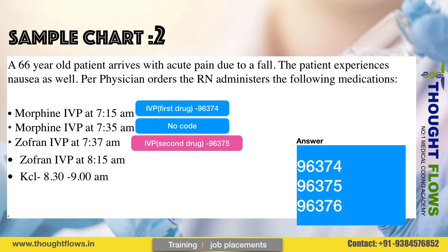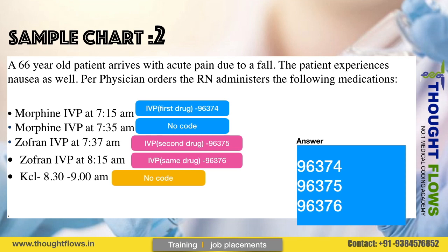Zofran repeat dose follows a time gap rule. Code 96376 is used for the repeat IV push of the same drug. KCL hydration is also administered. The hydration code follows the 31-minute rule.